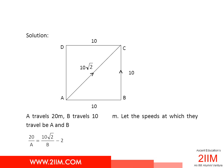Let's look at the figure. There is a square ABCD. A runs along the sides of the square AB and BC. B runs along the diagonal AC. A travels 20 meters. B travels 10 root 2 meters.